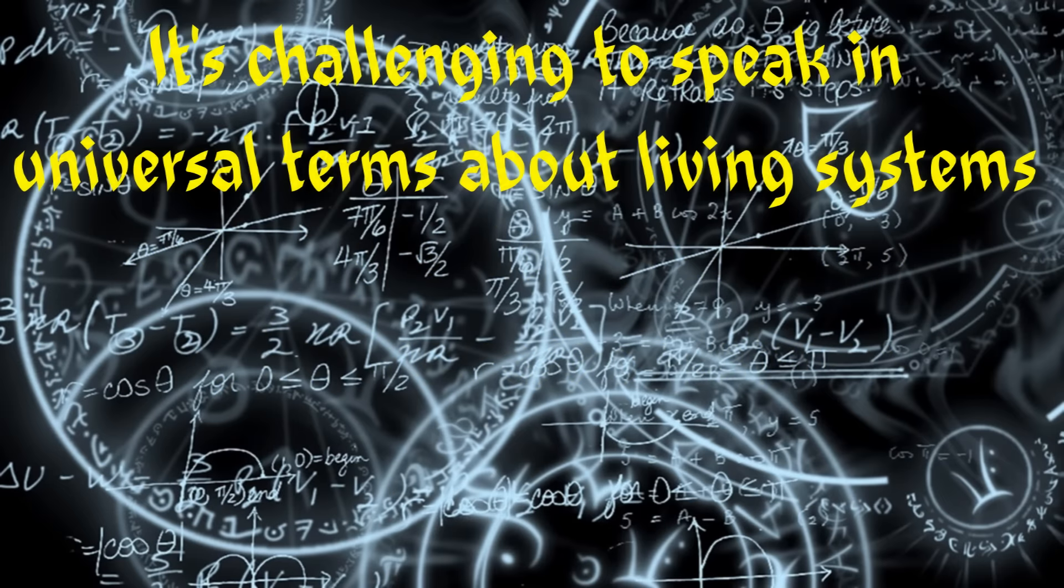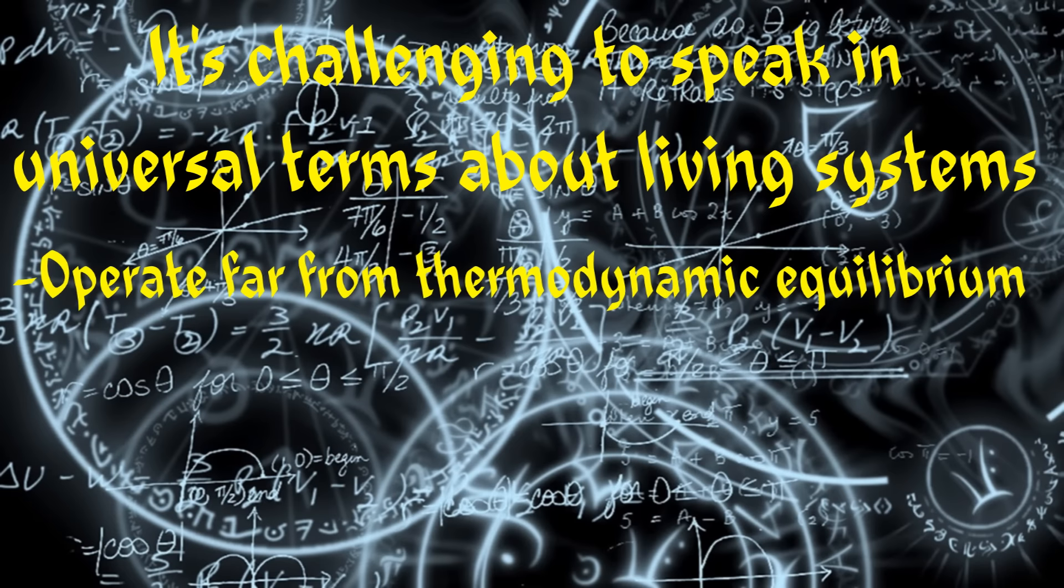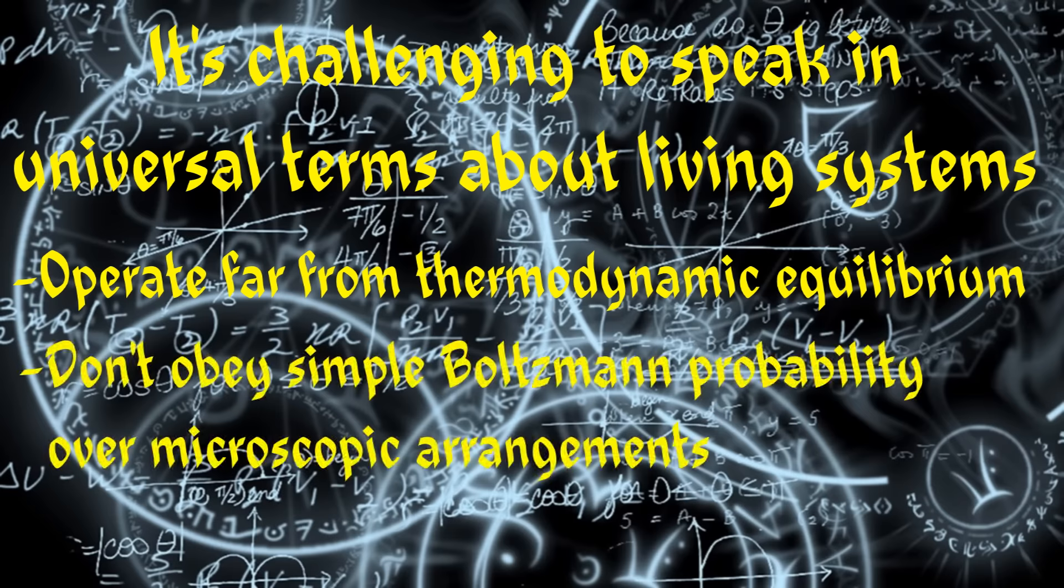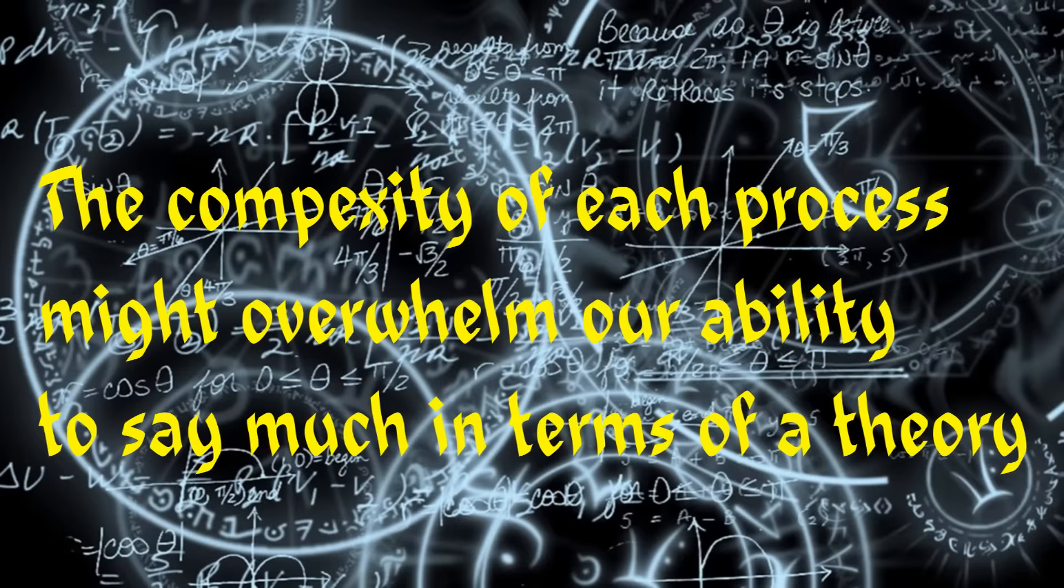Nevertheless, it has long been considered challenging to speak in universal terms about the statistical physics of living systems because they invariably operate very far from thermodynamic equilibrium and therefore need not obey a simple Boltzmann probability distribution of microscopic arrangements. Faced with such unconstrained diversity of organization, it is quite reasonable to worry that the particular mechanistic complexity of each given process of biological self-replication might overwhelm our ability to say much in terms of a general theory.